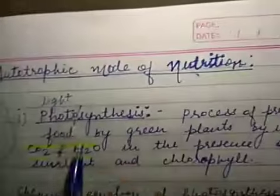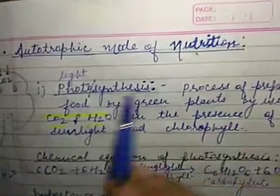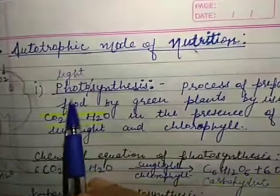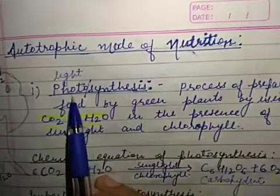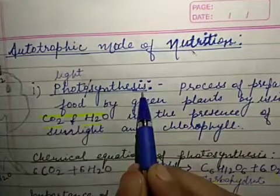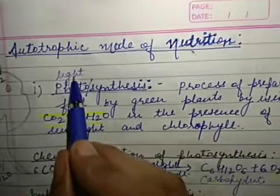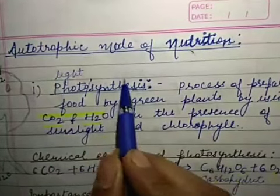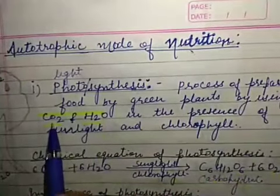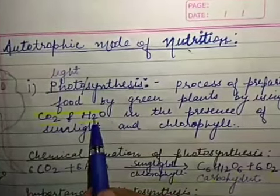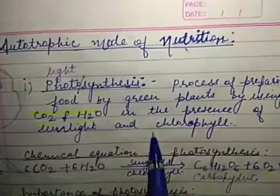Let's see the next topic. Autotrophic mode of nutrition. In this we have to discuss photosynthesis in detail. So first of all, we will discuss the definition of photosynthesis. Again, the word photo means light and synthesis means synthesize. The process of preparing food by green plants by using carbon dioxide and water molecules in the presence of sunlight and chlorophyll.